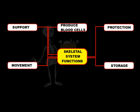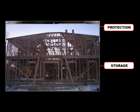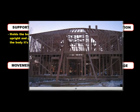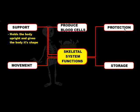Here we have a concept map based on all the functions that the skeletal system has — support, production of blood cells, protection, storage, and movement. Let's start off with support. Our skeletal system gives us support in our body, which allows us to stay upright and also gives the body its shape. It's very much like the skeleton of a house. If you've ever seen a house or skyscraper being built, you'll notice the frame is composed of joists along the floors and studs outlining the outside. Just like our skeleton supports the house, our skeleton gives us that framework so we're not a big fleshy blob sitting on the floor.